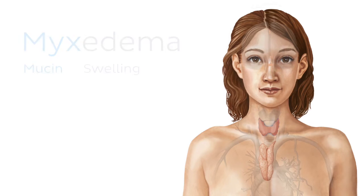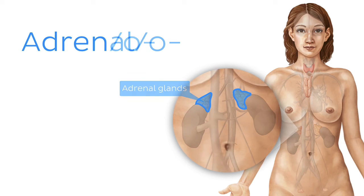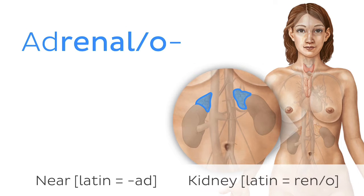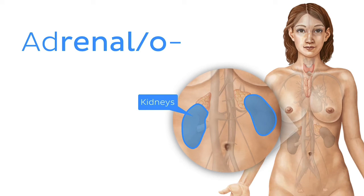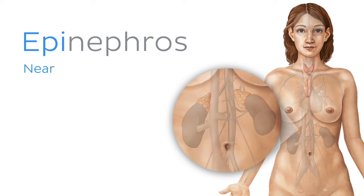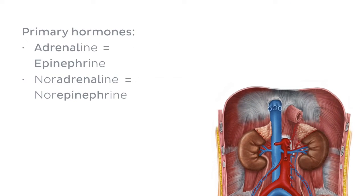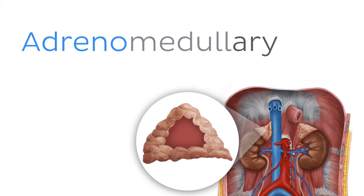The next pair of glands we're looking at are the suprarenal or adrenal glands and their two roots: adren or adreno, and adrenal or adrenalo. They are formed by the Latin prefix ad for near and ren or reno, which means kidney, indicating their location on top of the kidneys. The adrenal gland can also sometimes be called epinephros, which also means near the kidney but in Greek. This explains why the primary hormones of this gland are either known as adrenaline and noradrenaline, or alternatively epinephrine and norepinephrine.